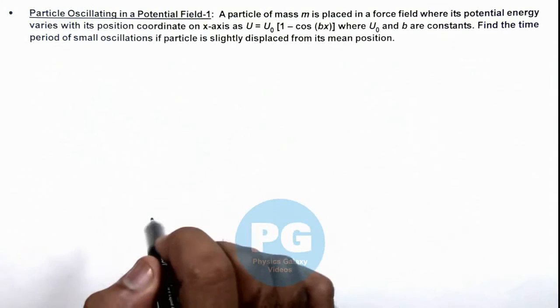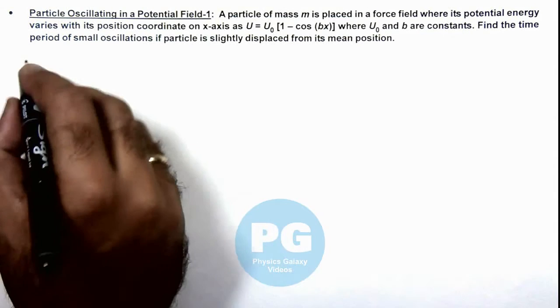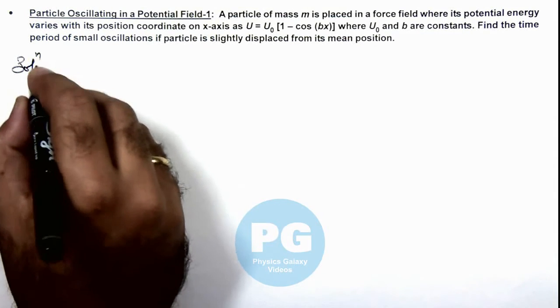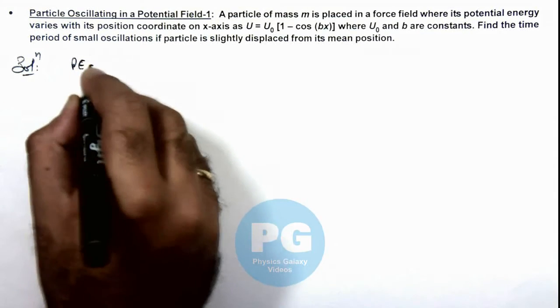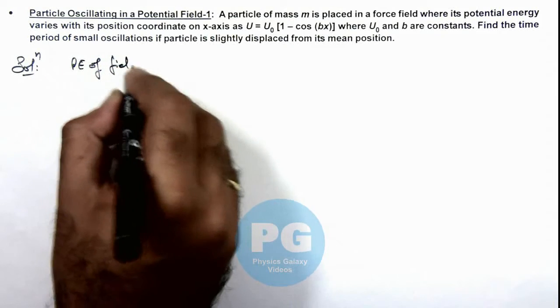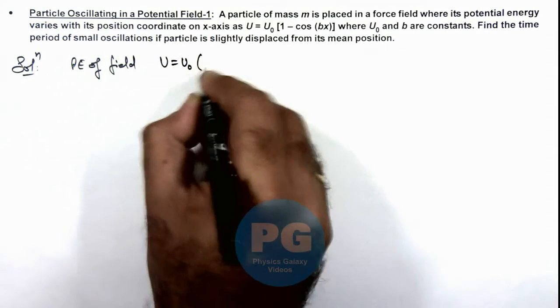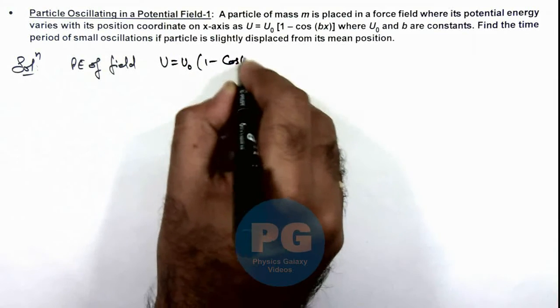If it is slightly displaced from its mean position. So here, as we are given the potential energy of field as U is equal to U₀(1 - cos(bx)),